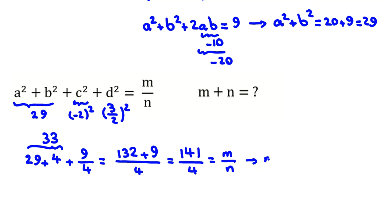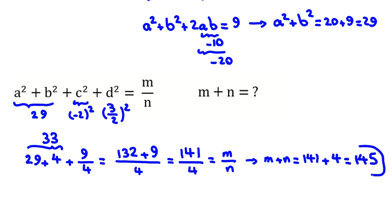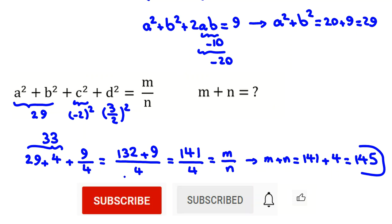The answer is 141/4, which is already in lowest terms, so m = 141 and n = 4. Therefore m + n = 141 + 4 = 145.